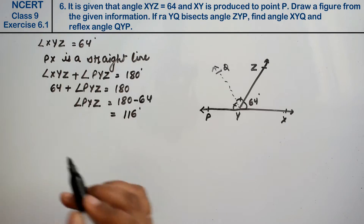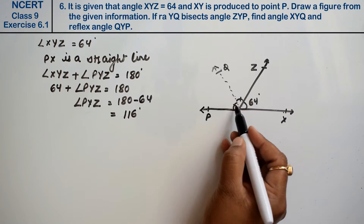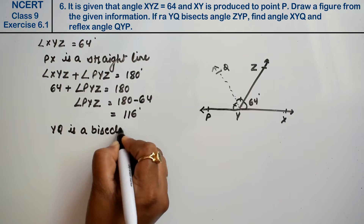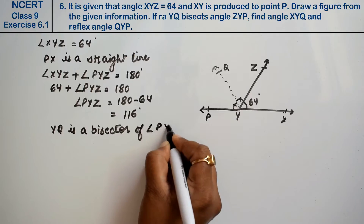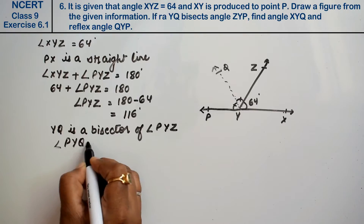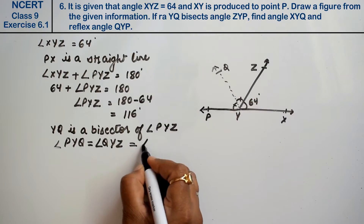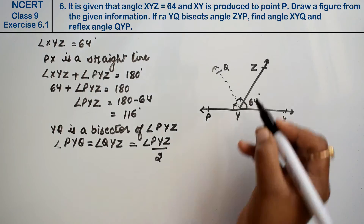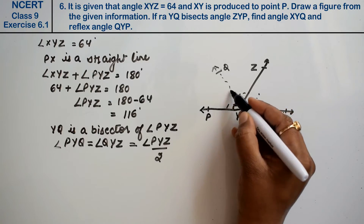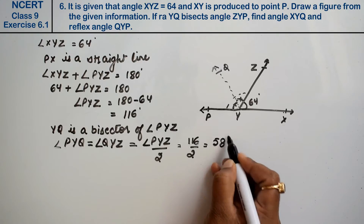116 degree का PYZ आगया। अब हमें निकालना है XYQ। As we know that YQ is a bisector of angle PYZ। तो angle PYQ equals to angle QYZ। यह पूरा angle पता है तो इसका आधा कर देंगे — 116 divided by 2 = 58 degree.